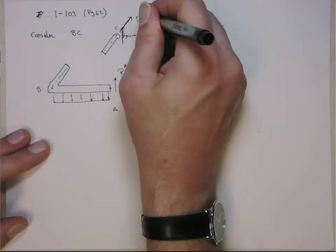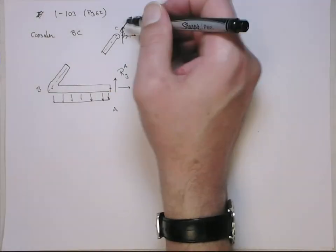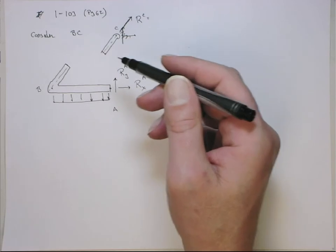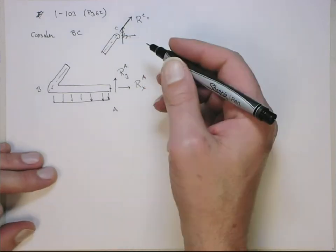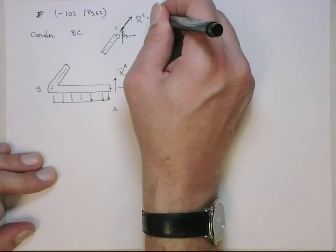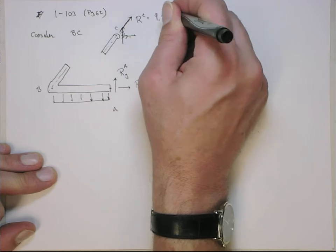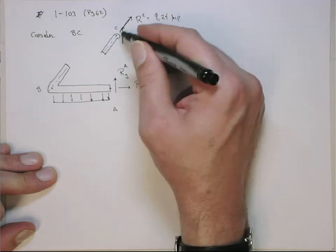So just to put that in here, we know that the reaction force at C, we know the direction it acts because it's a two-point element. That is 9.24 kip. It's positive, so it's acting in tension.